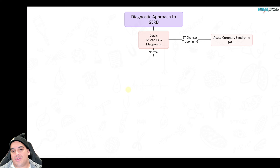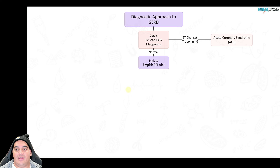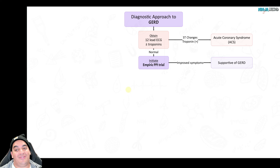If the ECG comes back normal with no troponin elevation, ST depression, or T wave inversions or elevations, then GERD becomes more likely. The approach is to try a treatment and see if it improves — initiate an empiric PPI trial. A proton pump inhibitor suppresses hydrochloric acid production; if symptoms improve, it's probably GERD.